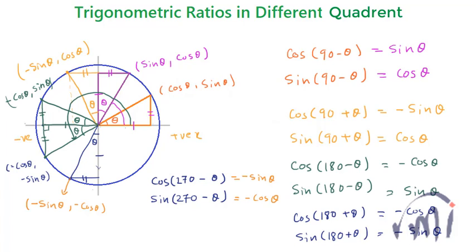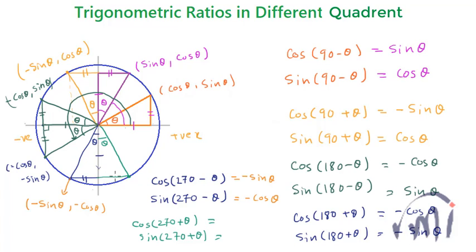For 270 plus theta, I draw a line where this angle is theta, and completing this triangle, the coordinates of this point represent cos(270 plus theta) and sin(270 plus theta). This length equals sin theta, so cos(270 plus theta) equals sin theta. This much length equals minus cos theta, so sin(270 plus theta) equals minus cos theta.